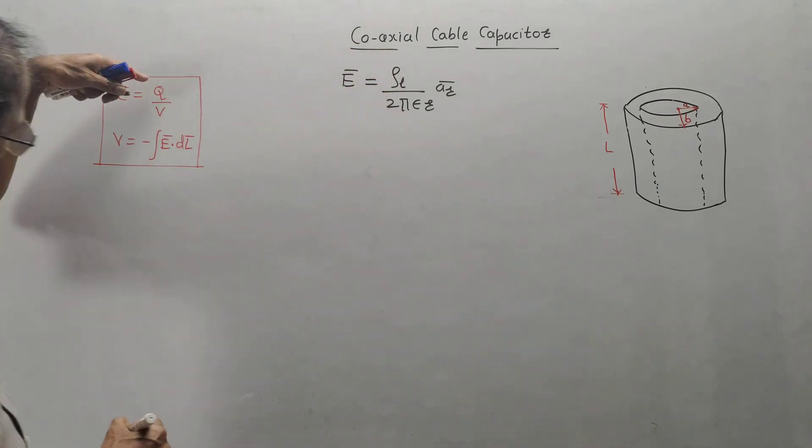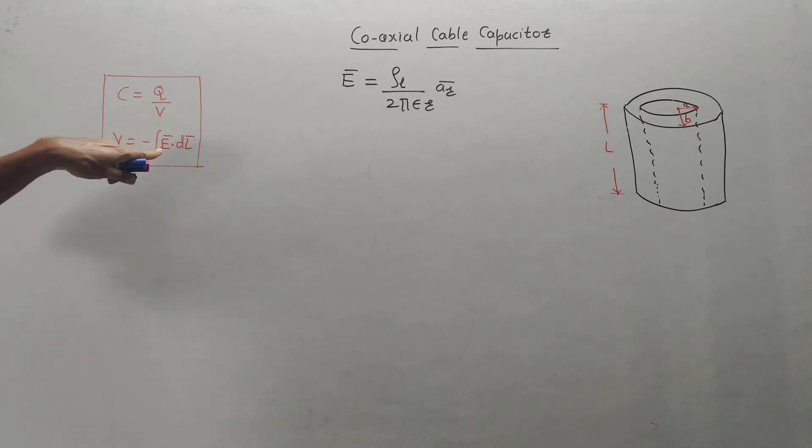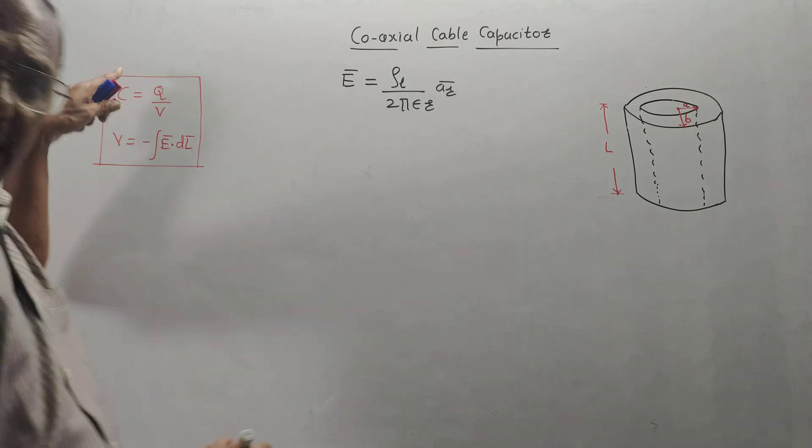Now, we have to make use of these two basic equations. Capacitance is Q by V and voltage is minus integration e bar dot D L bar. Finally, I need to make use of equation Q by V.